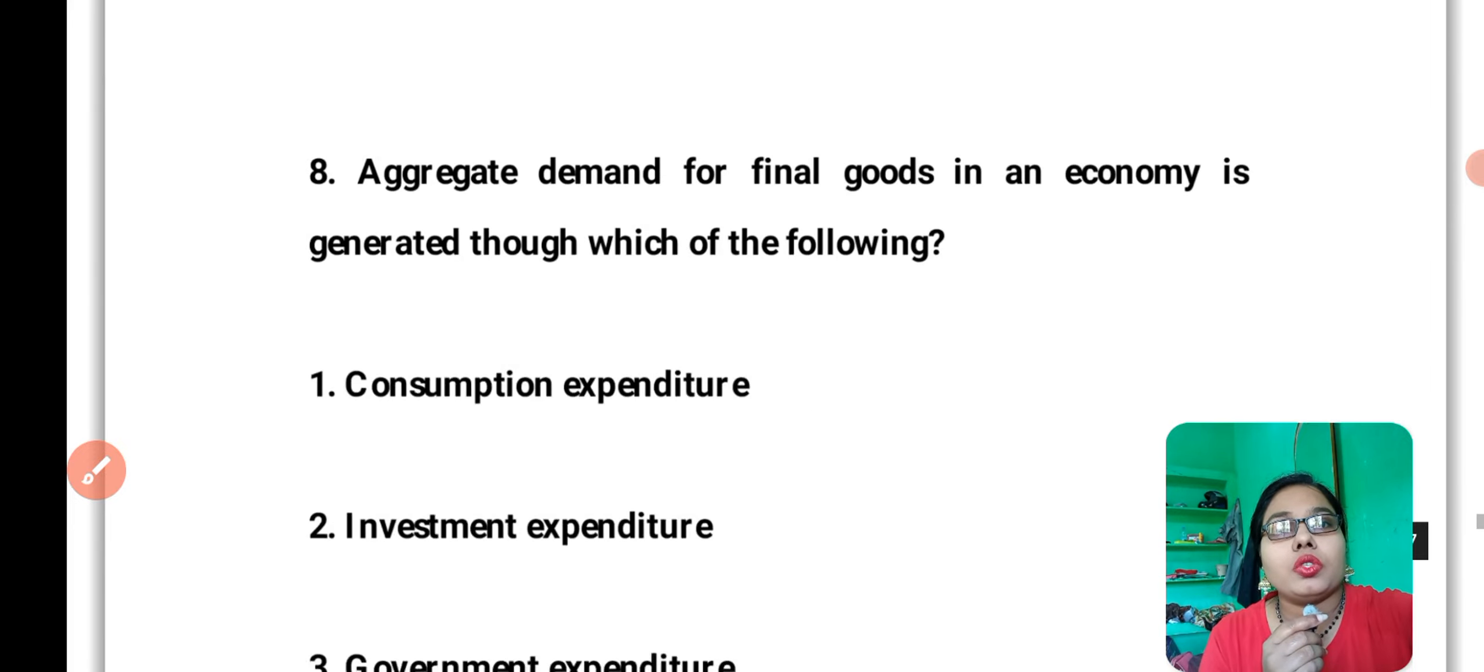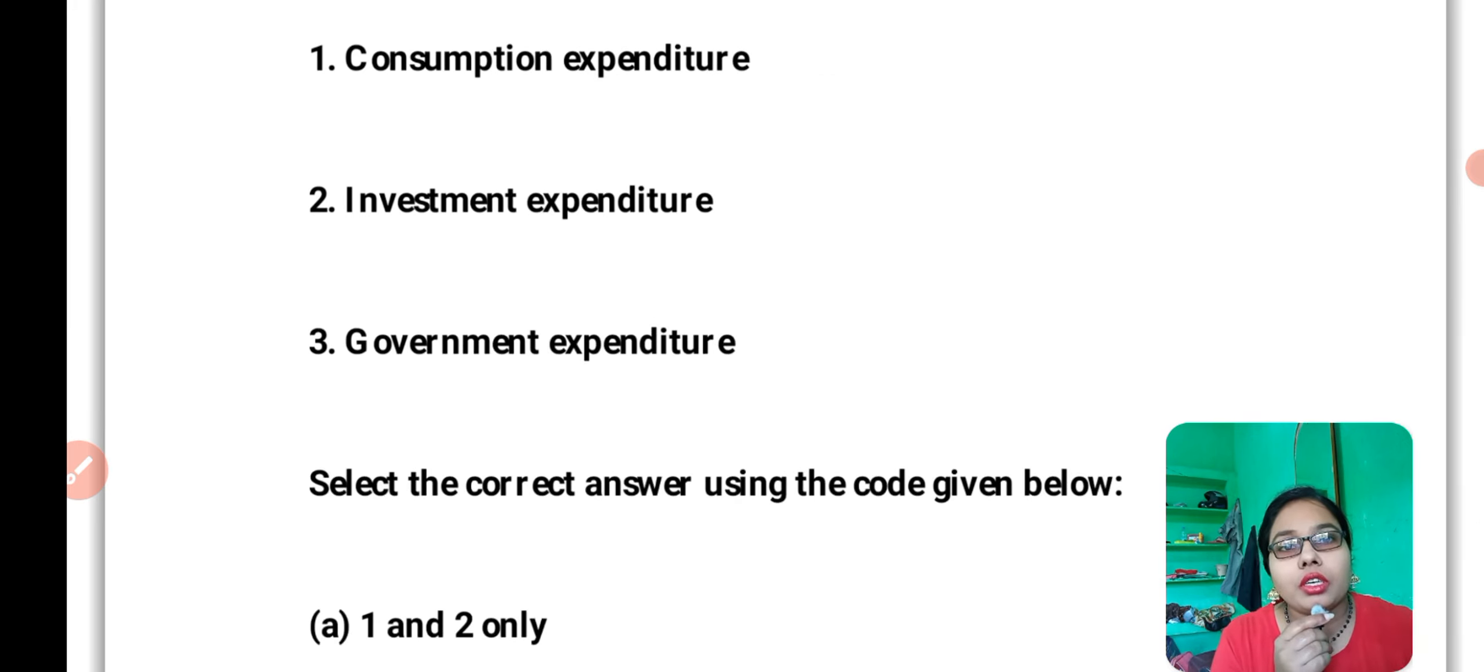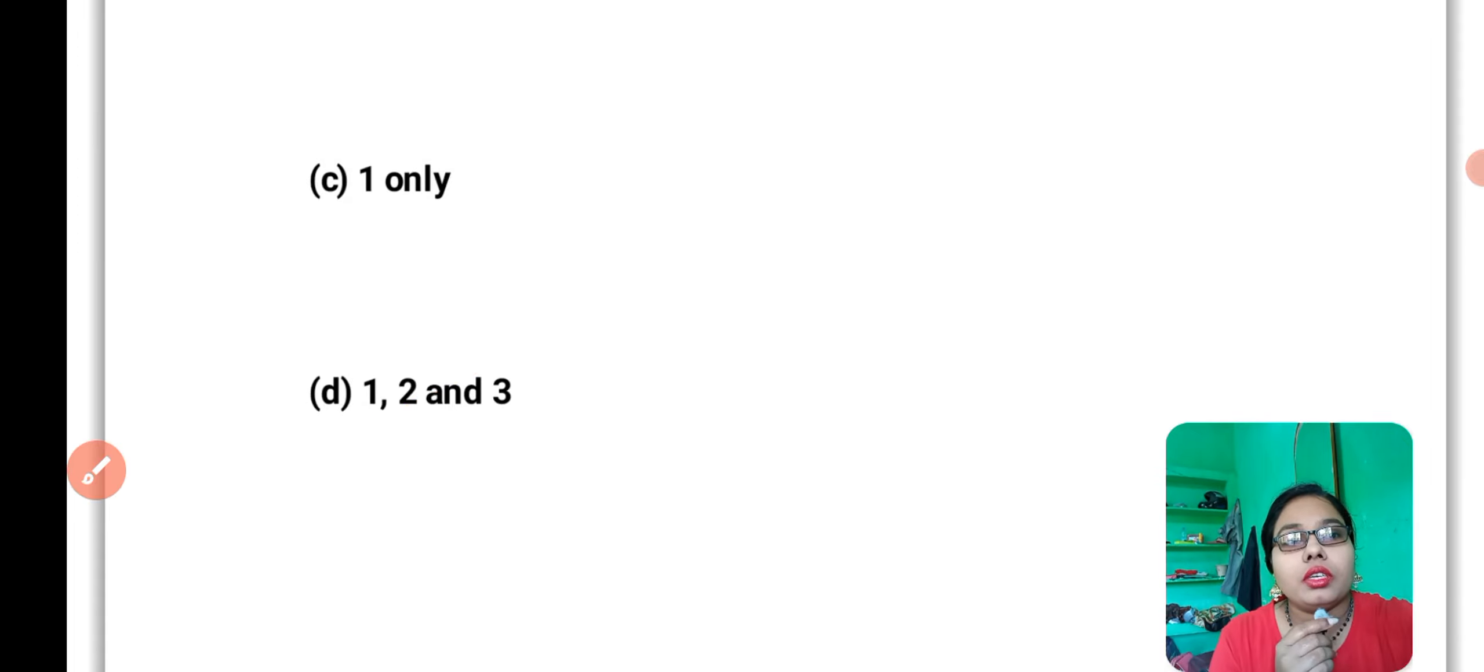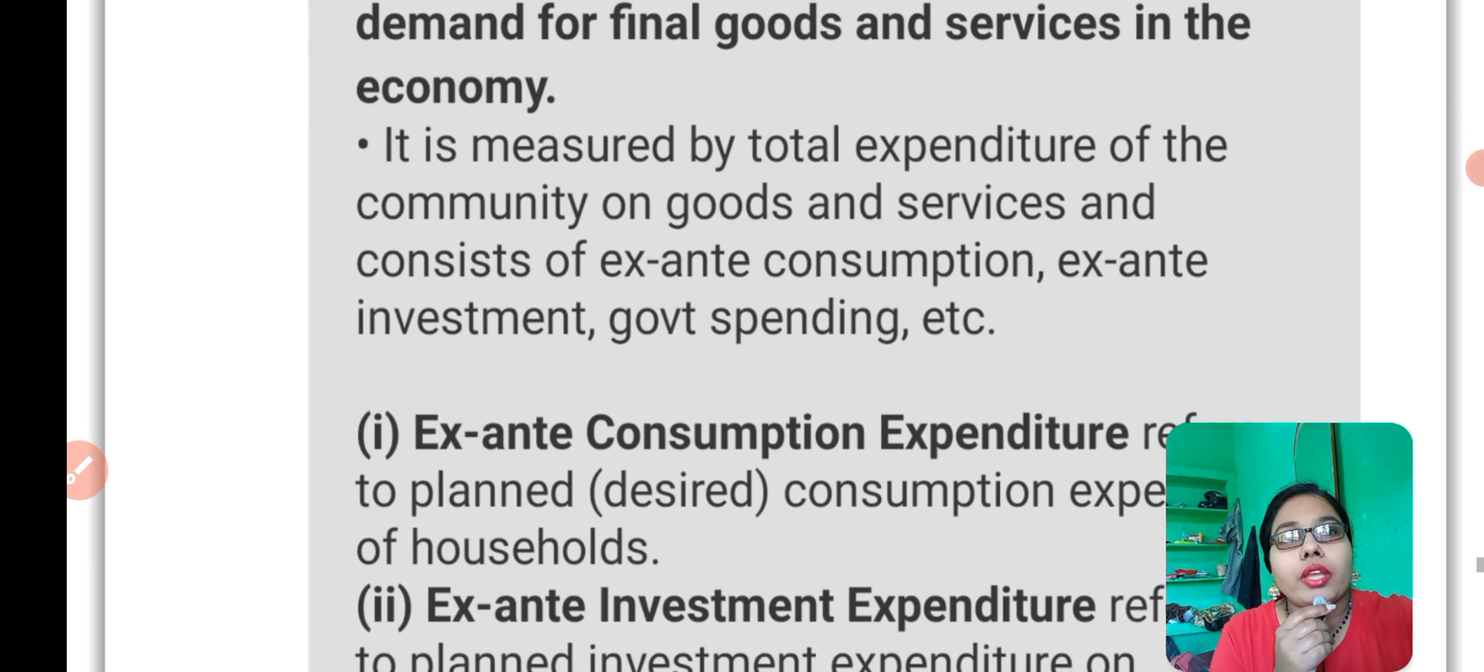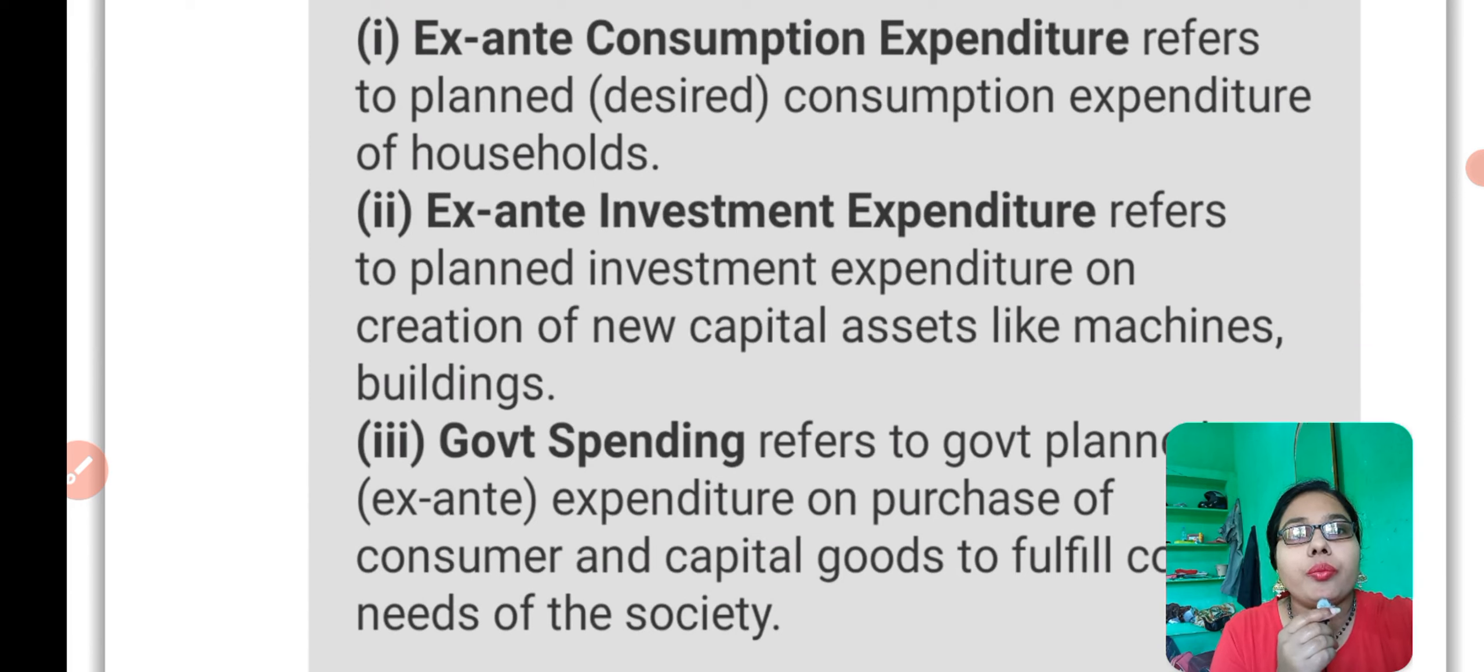Question number 8: Aggregate demand for final goods in an economy is generated through which of the following - consumption expenditure, investment expenditure, government expenditure. The correct answer is all three. Aggregate demand refers to the total demand for final goods and services in the economy. It is measured by total expenditure of the community on goods and services and consists of consumption expenditure, investment expenditure, and government expenditure.